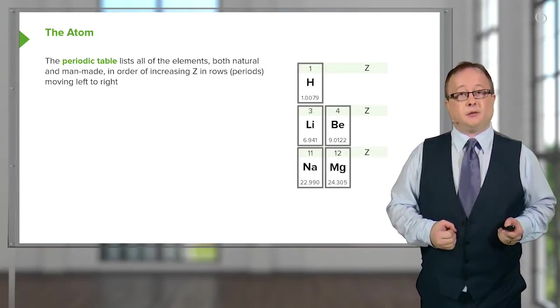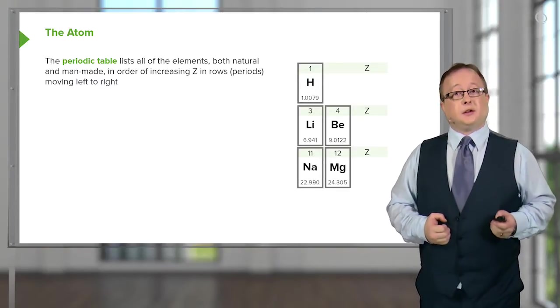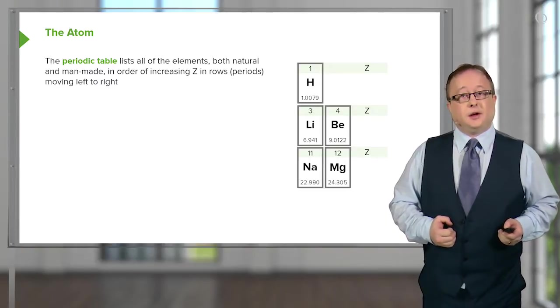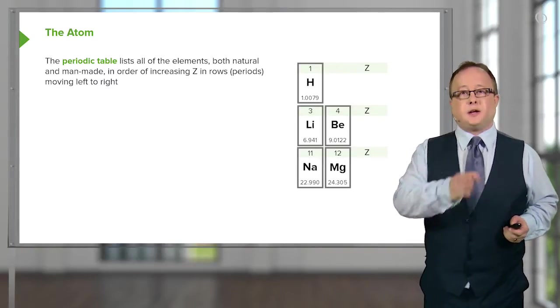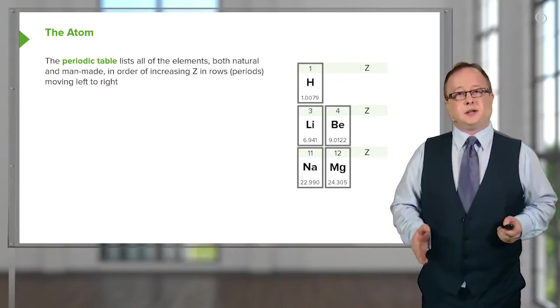This correlates the number of protons and the number of electrons that that element possesses in its atomic form. And as you'll see, you'll understand why I say atomic form.